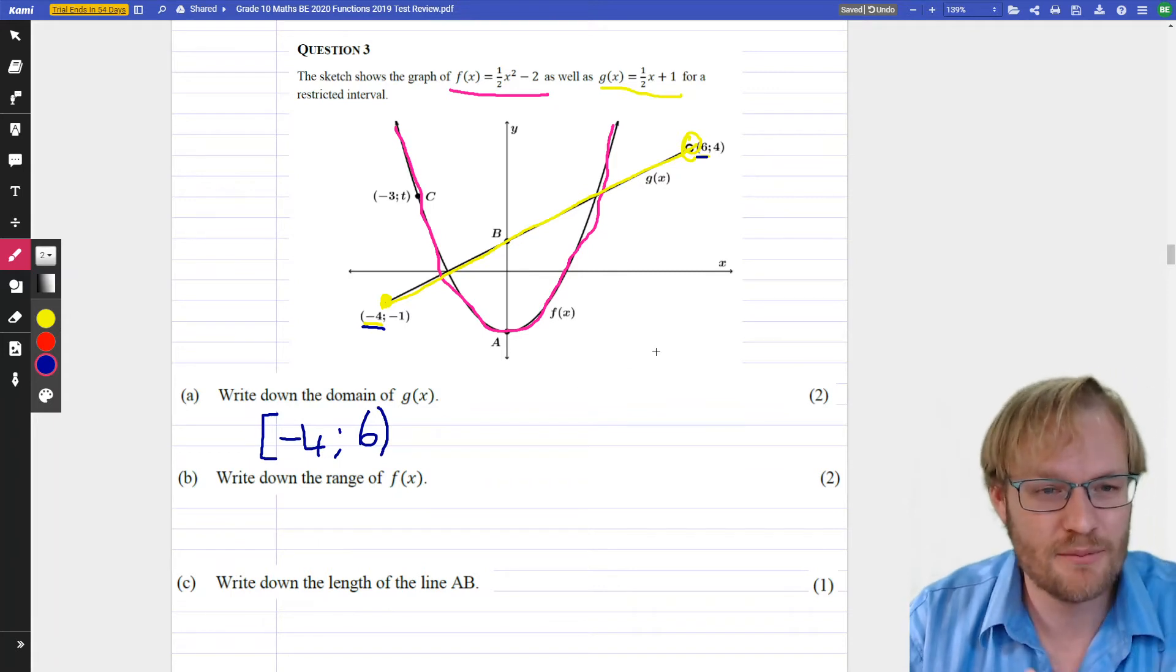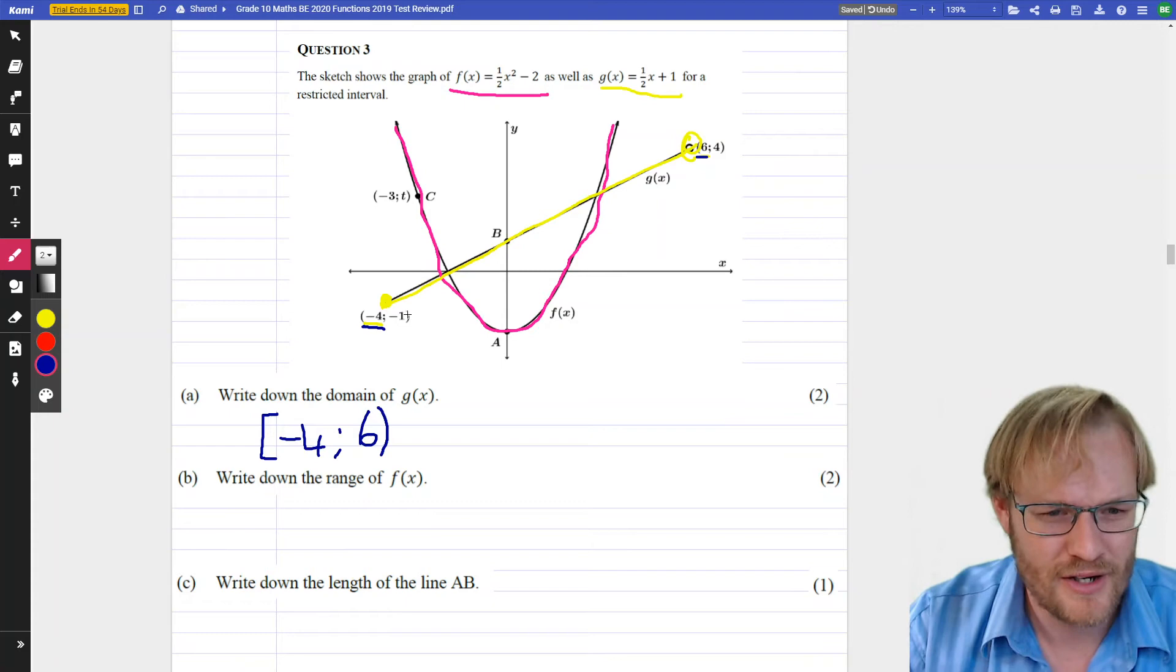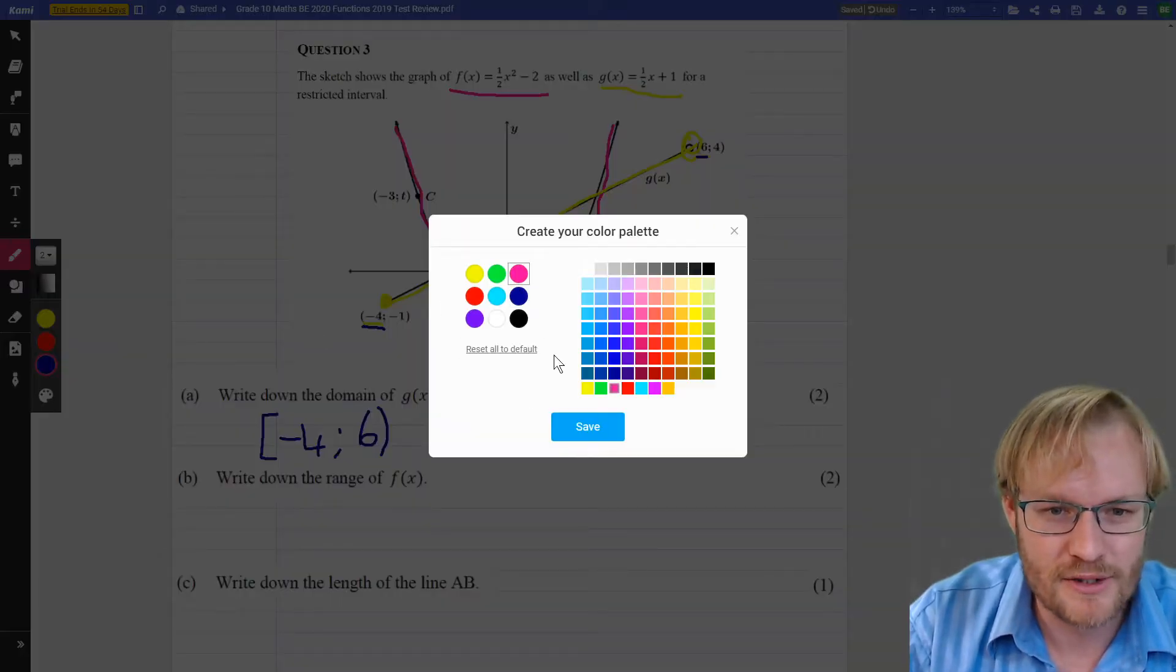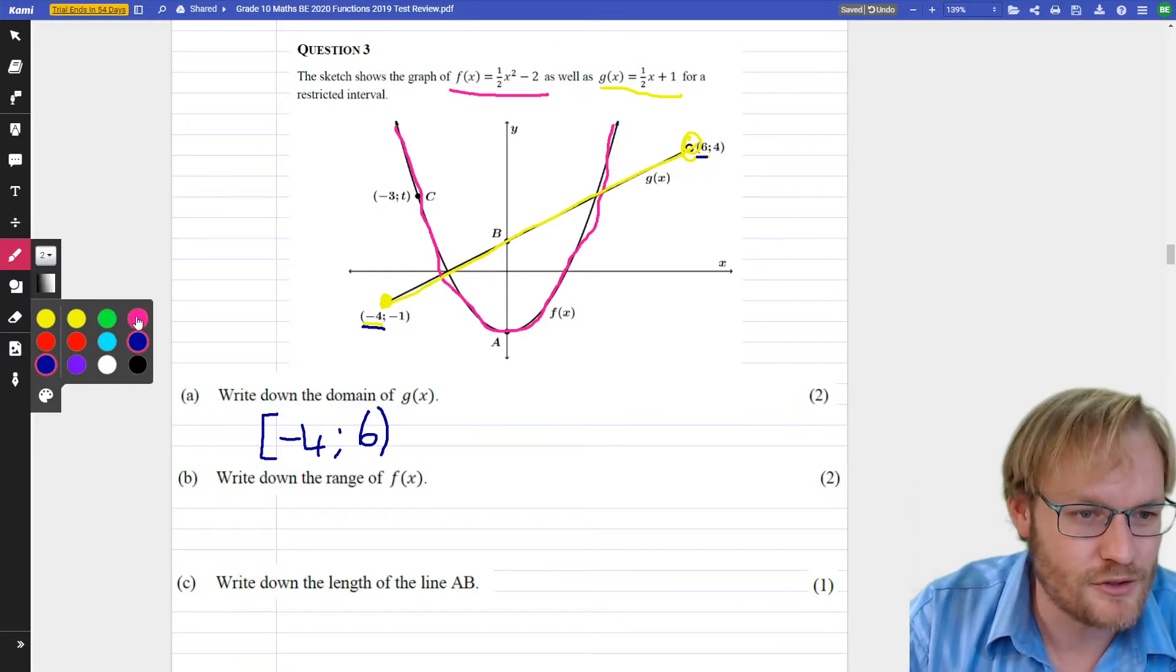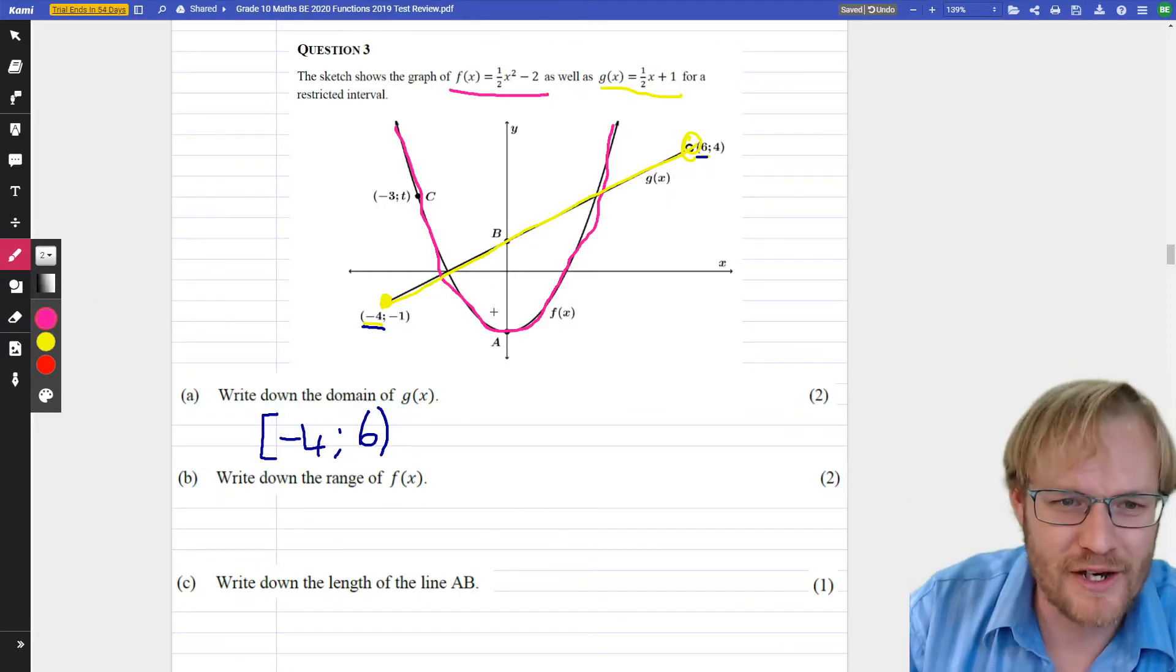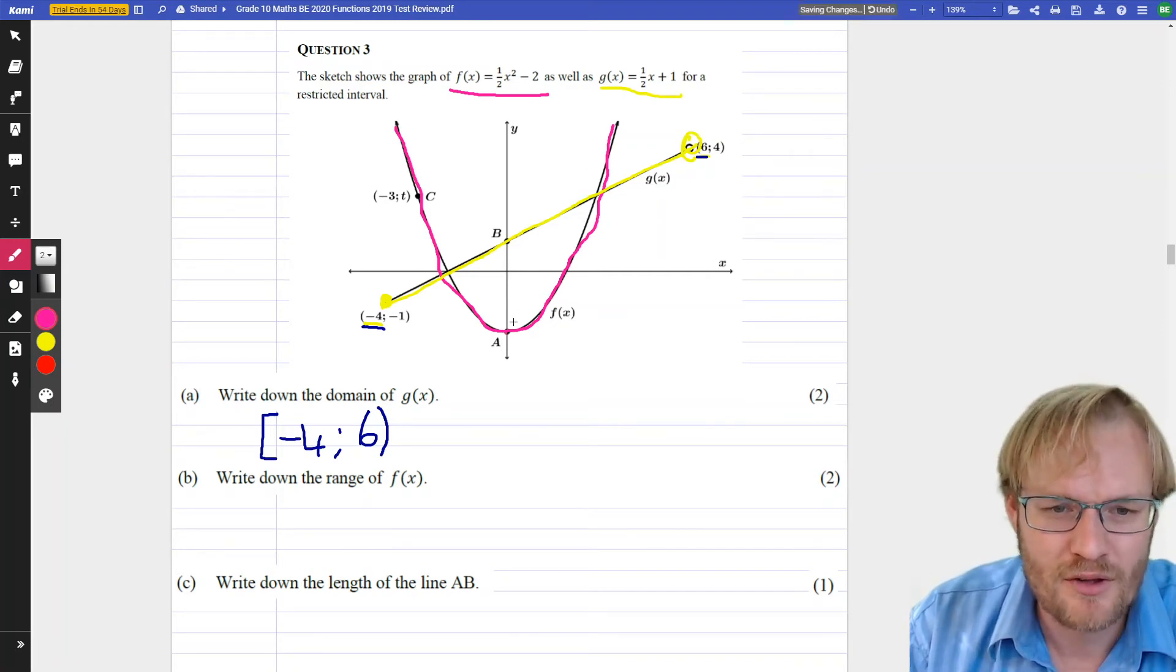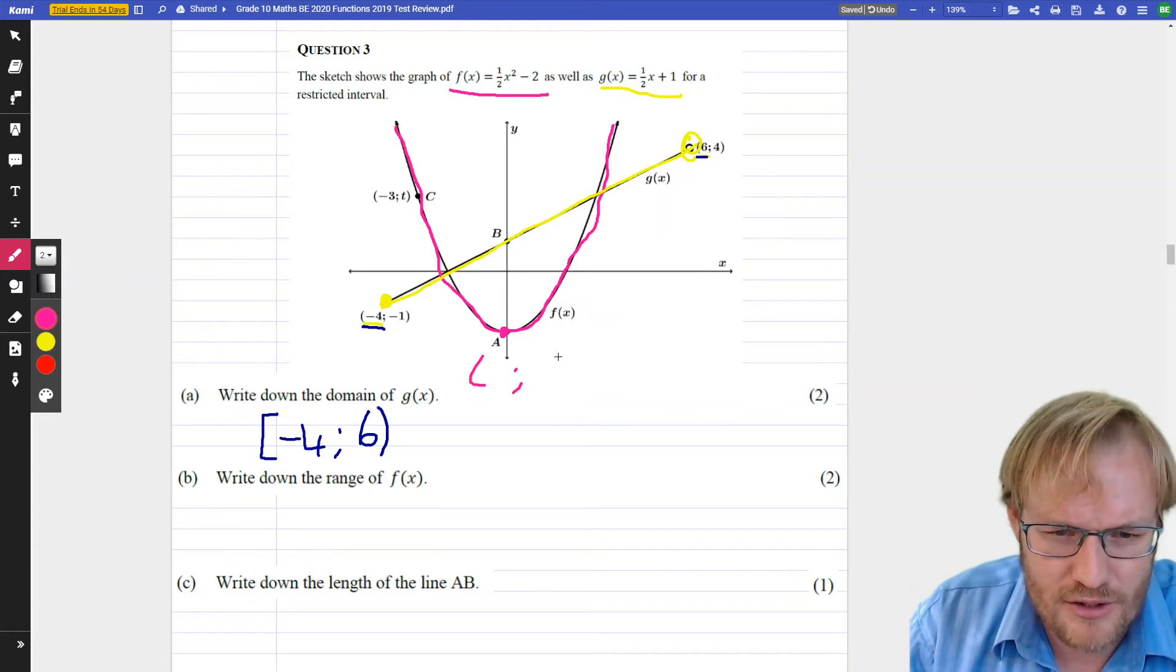Cool. I'm going to keep going for the same video because the questions are going to link up. Write down the range of f(x). f(x) was this pinky one. Cool. So we're on the parabola and where's my pink? Pink. I'm not doing well here. Pink, here it is. So the range of this here. So we're going to need the lowest value up to the highest value.